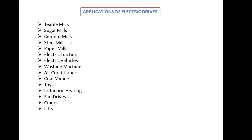Applications of electric drives include textile mills, sugar mills, cement mills, steel mills, and paper mills. They are also used in electric traction, electric vehicles, and domestic appliances like washing machines and air conditioners. That concludes the introduction to electric drives. In our next video, we will discuss real-time applications, speed control of electric drives, and why speed control is required in cement mills. Thank you.